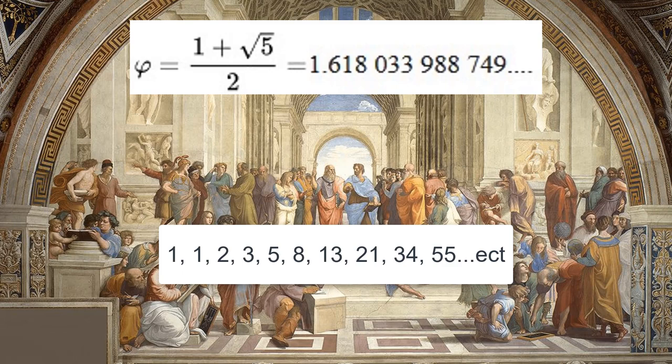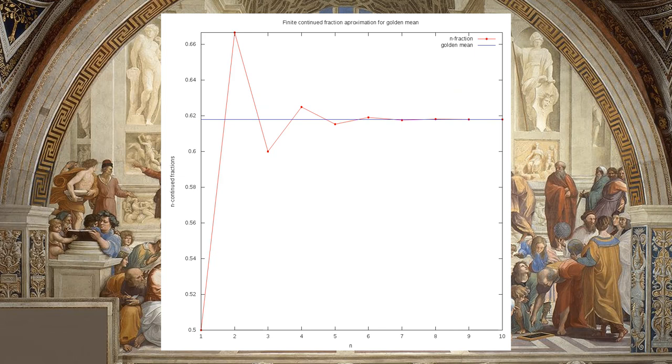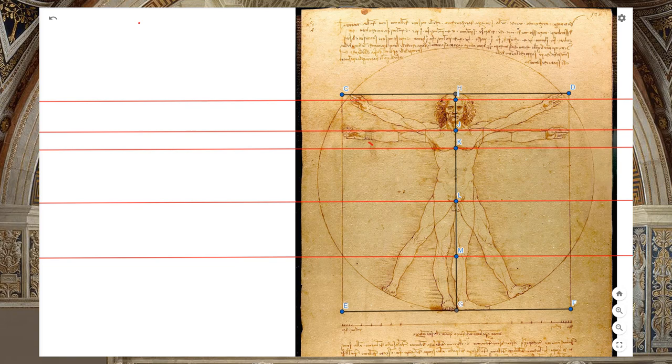Each number in the Fibonacci sequence is the sum of the previous two: one plus one is two, two plus one is three, three plus two is five, and so on. Two divided by one is two, three divided by two is 1.5, five divided by three is 1.66, eight divided by five is 1.6 — the higher we go, the closer we get to the irrational number phi, 1.61803398. This means that the lines in the pentagram quite profoundly reflect the idea of sums of the previous two.